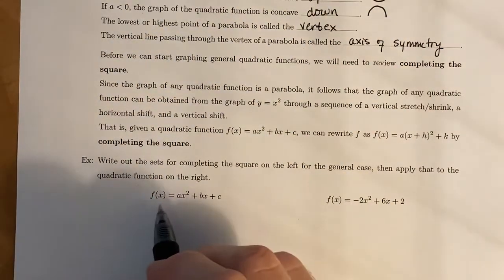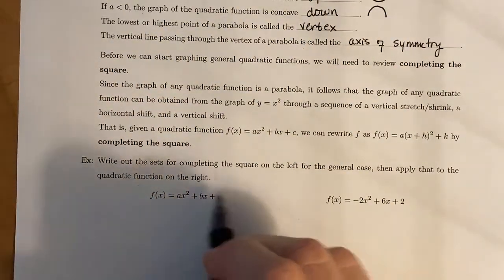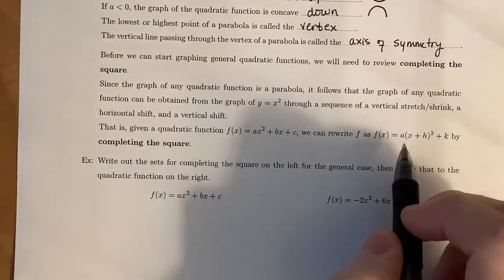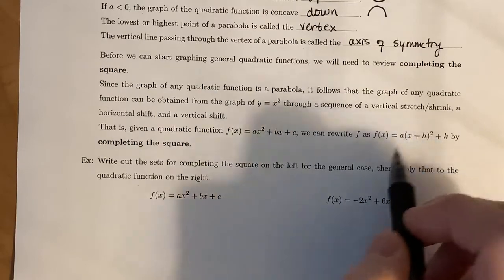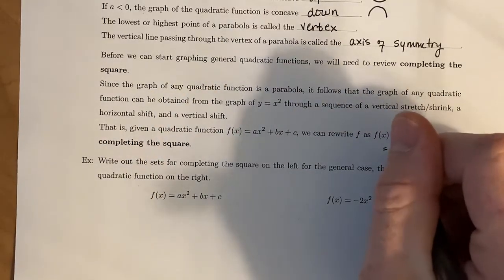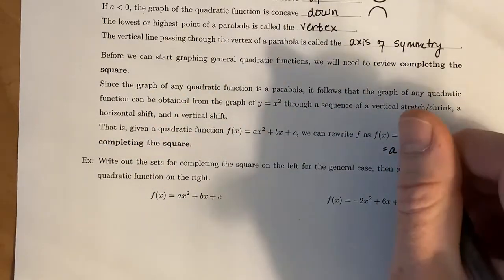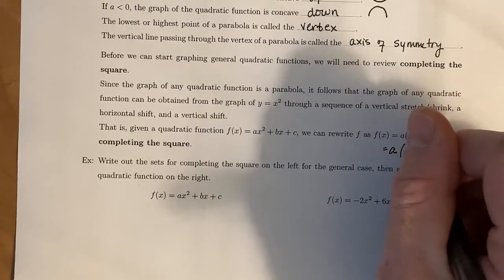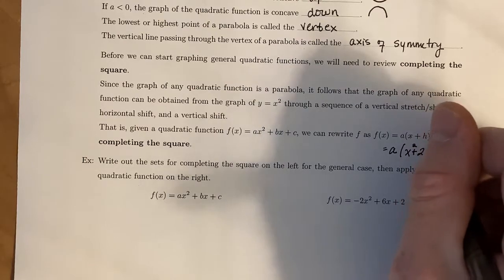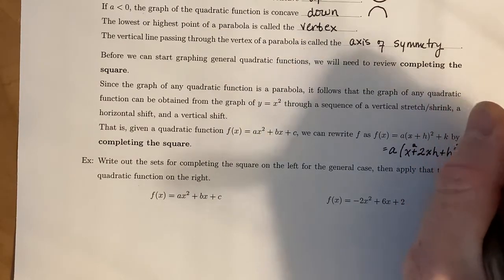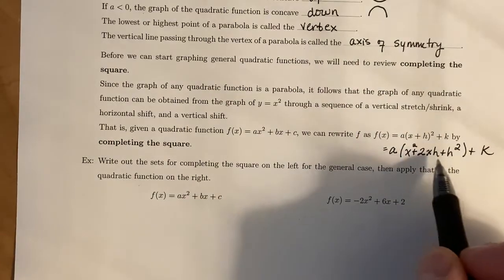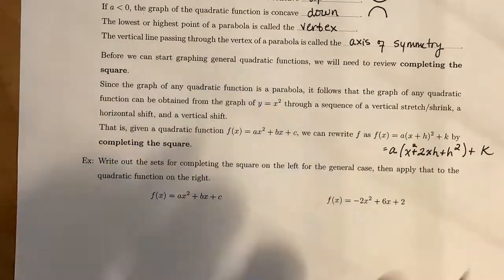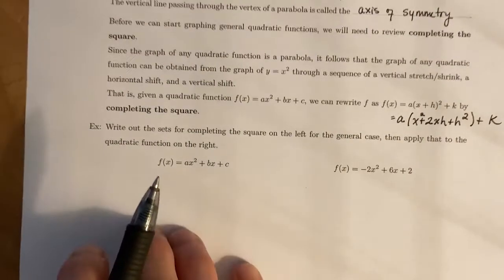Now, before we dive into completing the square for the general thing, and then applying it to this example, let's see what happens if we multiply this out. So that gives us a. If we foil (x + h)(x + h), we get x² + 2xh + h² + k. Now, this 2 right here is going to be very important when we start talking about completing the square.